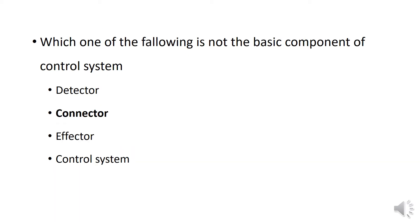Which one of the following is not the basic component of control system? Control system has three components. First number is detector, second number is control center, and third number is effector. Three components in the control system.